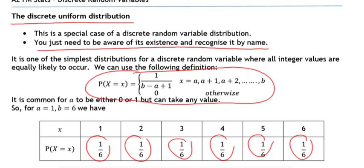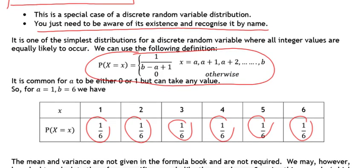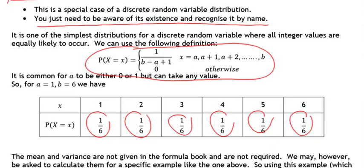Essentially, you just need to be aware that that particular distribution has this name, the discrete uniform distribution, should it be referred to. So that's really a summary of the key information stored on that final page.